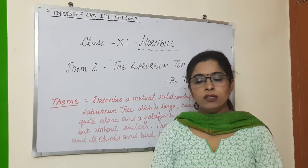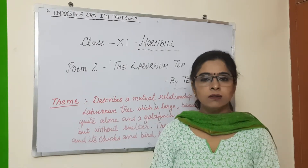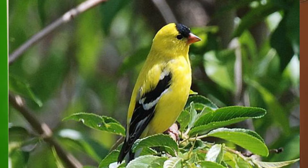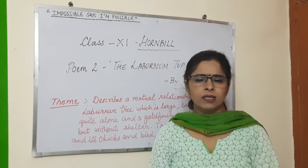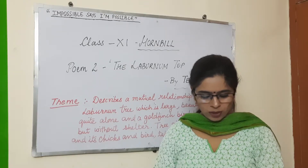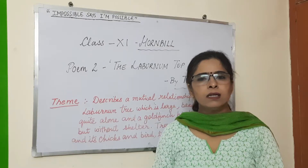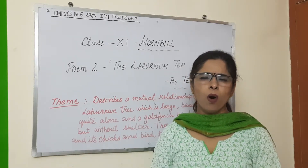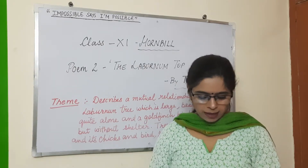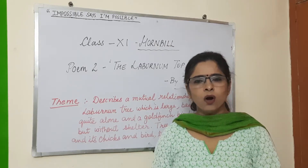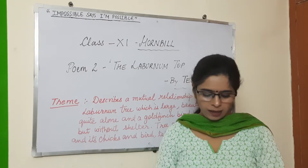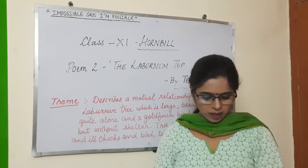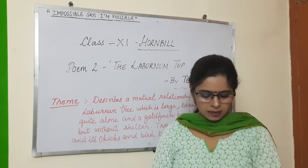The goldfinch comes with a twitching chirrup. As I have told you, it is a very small singing bird with yellow feathers on its wings. 'Twitching chirrup' means that all of a sudden it makes a short, high-pitched sound — a suddenness, a startlement at the branch end. 'Suddenness' means all of a sudden, and 'startlement' means a sudden surprise at the branch end, just for a very tiny, calm moment.